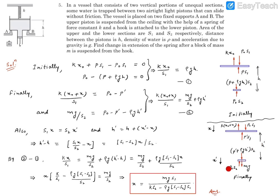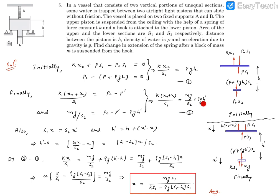For the lower piston in the final state, the new gap between pistons is H'. A new force Mg acts downward (from the suspended mass M). P₀S₂ acts upward, and the pressure from above is (P' + ρGH')S₂ acting downward. Dividing by S₂ gives: P₀ − P' − ρGH' = Mg/S₂. Now we subtract this equation from the upper piston equation to eliminate P₀ and P', which gives: K(X₀ + X)/S₁ − ρGH' = Mg/S₂ + ... We need to also express H' in terms of known quantities.